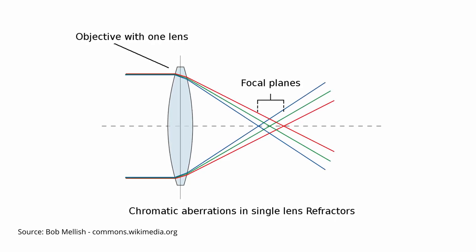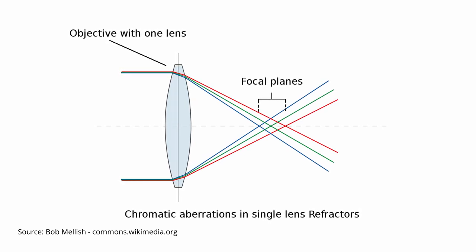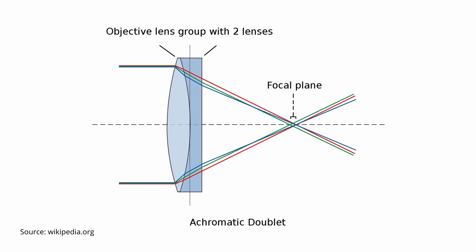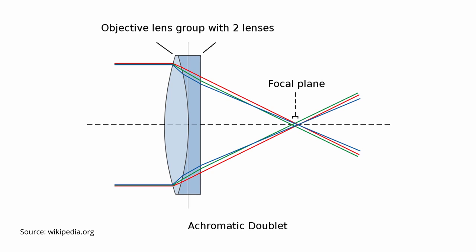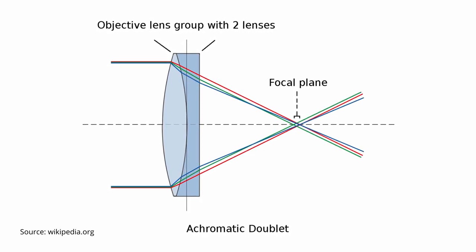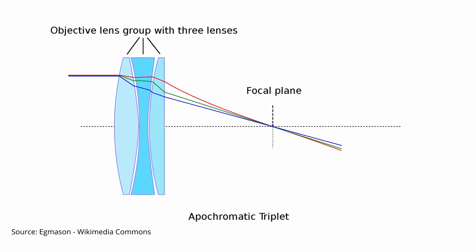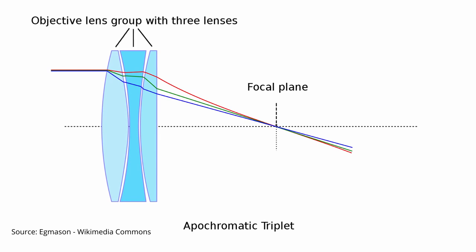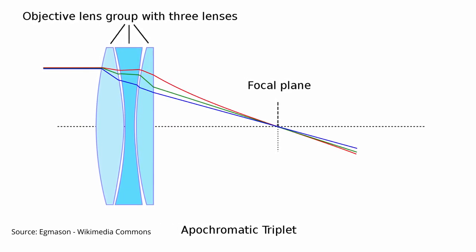Unlike reflecting telescopes, refractors are susceptible to chromatic aberrations because lenses refract different wavelengths of light differently, resulting in each wavelength focusing in slightly different focal planes. To overcome this, the achromatic refractor or achromat was invented, using objective lenses with multiple elements that bend light so most wavelengths focus in the same plane. To improve further, the apochromatic refractor was developed, using lenses made of low-dispersion or ED glass, allowing red, green, and blue wavelengths to all focus in the same plane, resulting in very sharp, contrast-rich images without chromatic aberrations — which is why apochromatic telescopes are very popular for astrophotography.